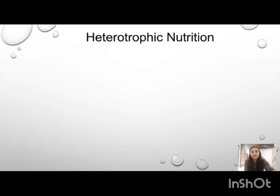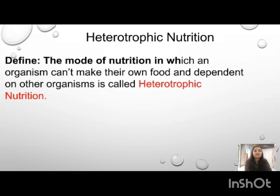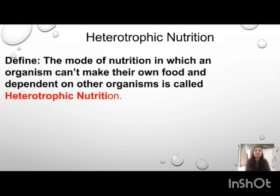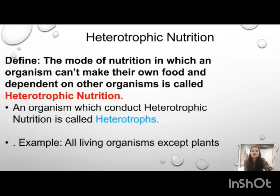The next is heterotrophic nutrition. The definition is: the mode of nutrition in which an organism cannot make its own food and is dependent on other organisms is called heterotrophic nutrition. They always depend on others for food. The organisms which conduct this type of nutrition are called heterotrophs. The example is all living organisms except plants, since plants are classified under autotrophic nutrition.